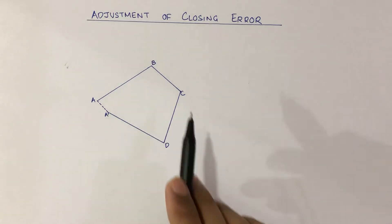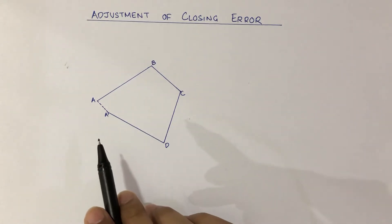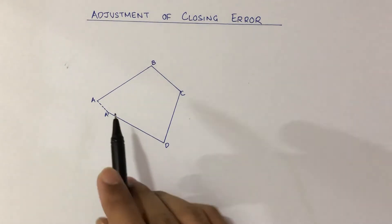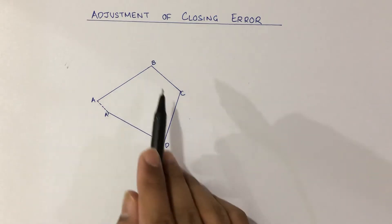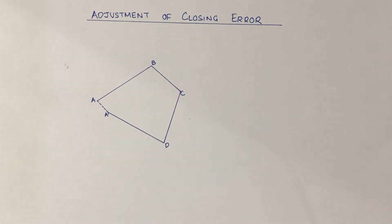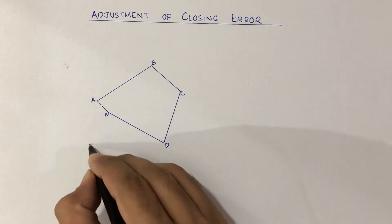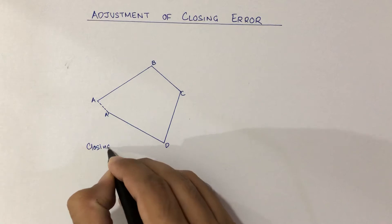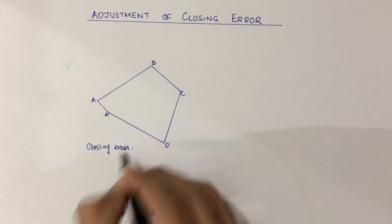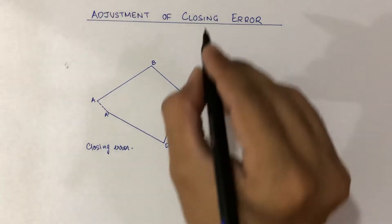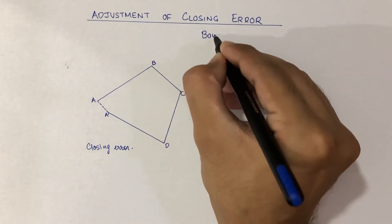Suppose there is a traverse and this traverse is not able to close due to some or the other unavoidable circumstances, meaning the starting point does not coincide with the finishing point. The length AA' is known as the closing error, and this closing error has to be adjusted by a method which is known as the Bowditch rule.